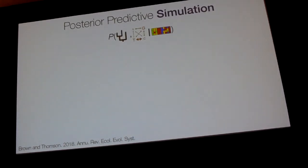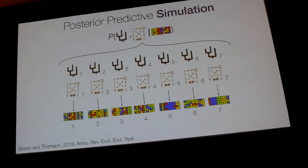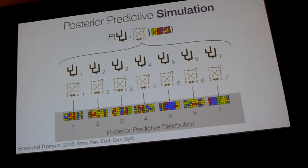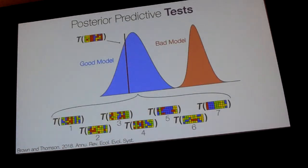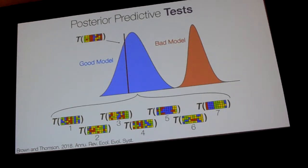Mechanically, we use posterior predictive simulation. If we've done our Bayesian analysis and have a posterior distribution of trees and model parameter values, we draw samples from that posterior distribution — say, seven trees and seven sets of model parameters. We use those to simulate seven sequence datasets, seven alignments — this is our posterior predictive distribution. We then take those simulated datasets, calculate some test statistic quantifying something important about them, and calculate that same number for our empirical data. We simply ask: is the empirical data a reasonable draw from this posterior predictive distribution? If the model is doing a good job, it looks like the blue distribution; if it's not capturing something important, the posterior predictive distribution might look like the red one — very distant from the empirical.